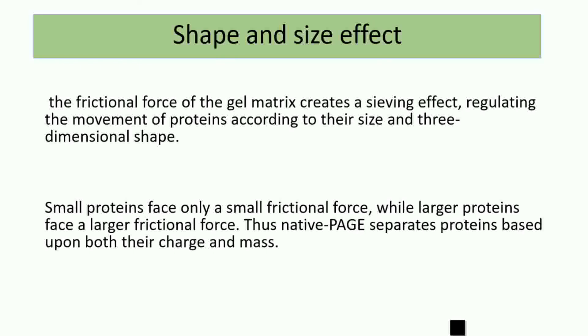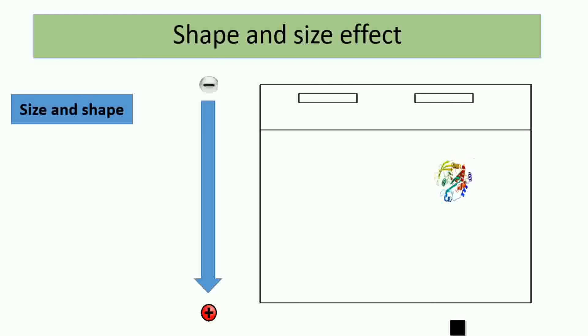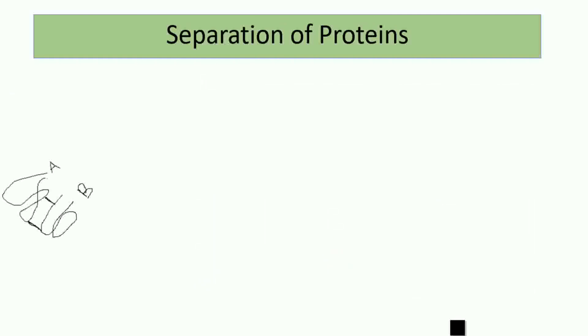Small proteins move faster toward the positive pole, unlike proteins that are much larger with more complicated shape, which move more slowly through the sieving gel. If we have two proteins, one more globular and one fibrous, the globular protein's movement through the gel will be much harder than the fibrous protein.